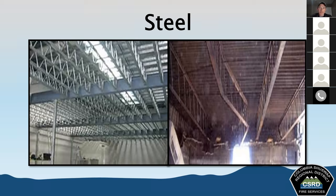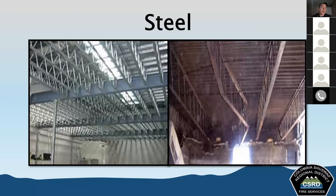A critical thing to remember about steel is that structural members will expand and elongate when heated. A 50-foot beam may elongate by as much as four inches, which can have devastating effects on a structure. Failure can be anticipated at temperatures at or above 1,000 degrees Fahrenheit (538°C). The exact temperature varies based on the size of the steel beam, the load it's under, the composition of the steel, and the geometry of the member.